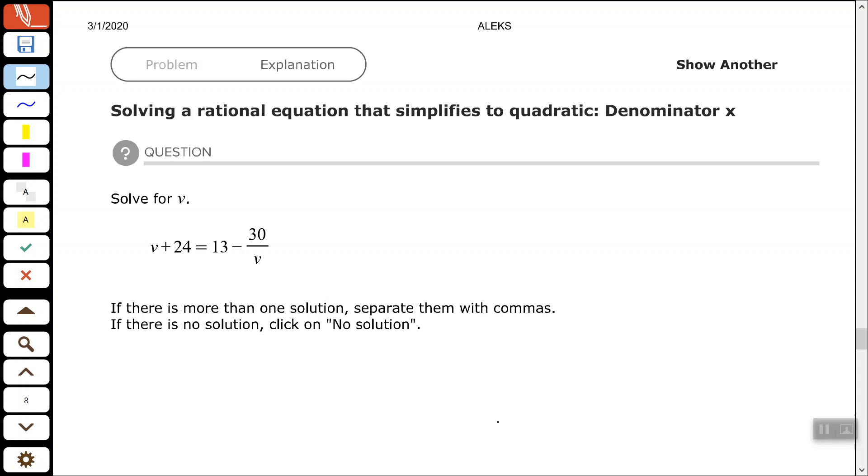So we're looking here, and our denominator is, we have the equation V plus 24 equals 13 minus 30 over V. So the only denominator we have there is V.